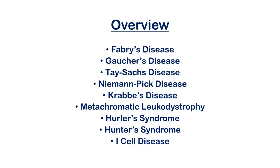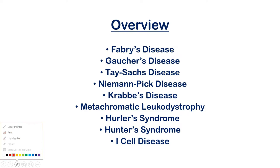Here's an overview of the diseases we're going to look at. I want to cluster some of these because a lot of them go together in terms of distinguishing characteristics. Many present very similarly — for example, Tay-Sachs and Niemann-Pick disease present similarly but have one really important distinguishing characteristic to help separate the two.